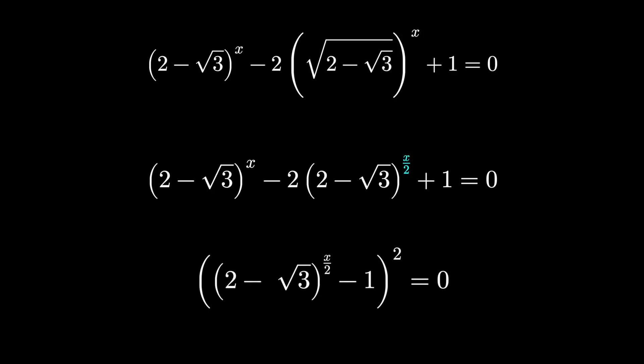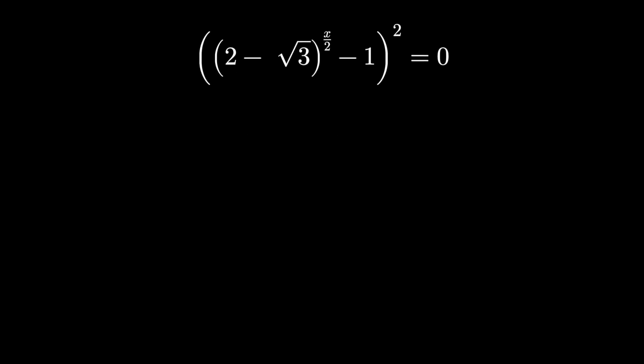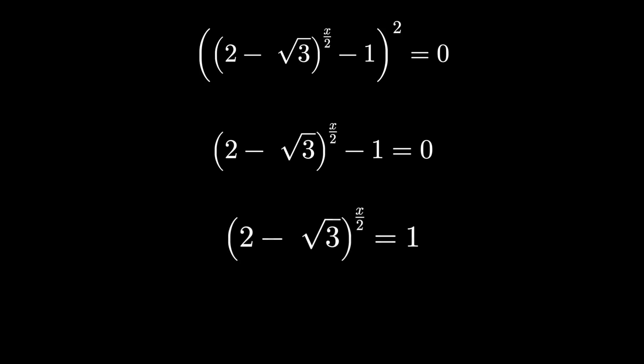Now this comes down to algebra rules and manipulating the terms. We could square root both sides, we'll say the square root of zero is zero, add one to the other side. This is an exponential equation.